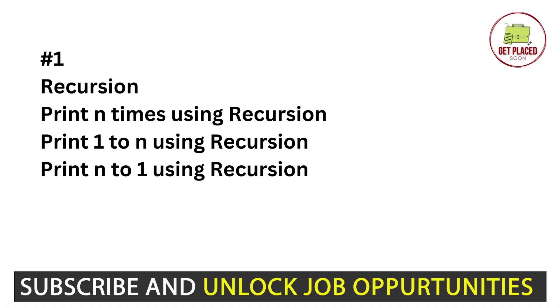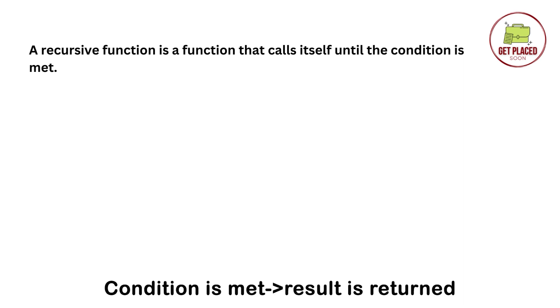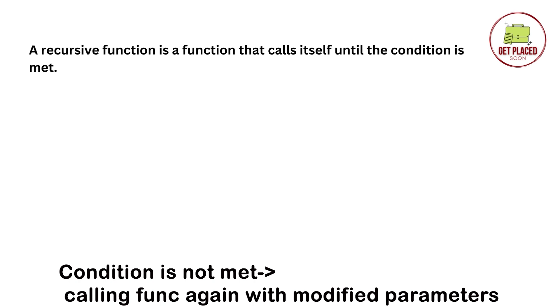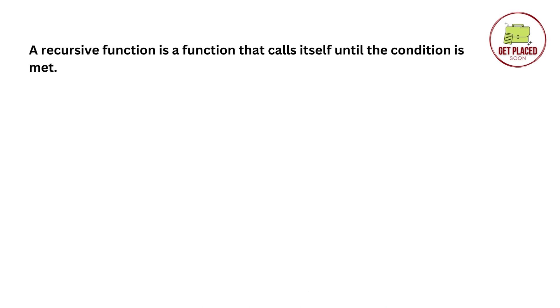Before getting started with the problems, let me give you a small recap on recursion. A recursive function is a function that calls itself until the condition is met. We will write a condition, and if the condition is met we will return the result. If the condition is not met, we will call the function again with modified parameters. Until the condition is met we keep on calling the function again and again, and this process is called recursion.